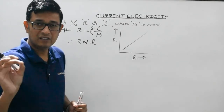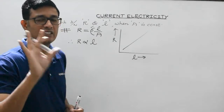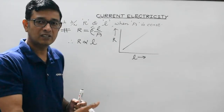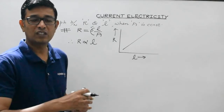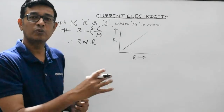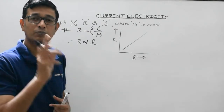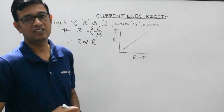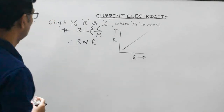If the cross-sectional area remains constant and the length of the conductor is made twice, the resistance will also become two times. If the length is made four times, the resistance will also become quadruple — four times — provided the cross-sectional area remains constant.